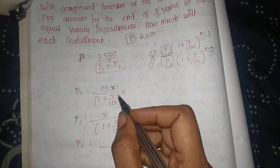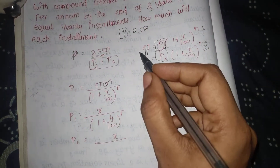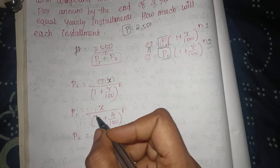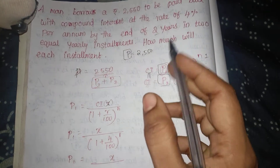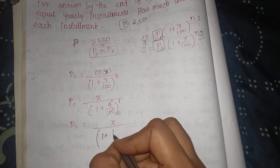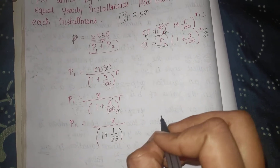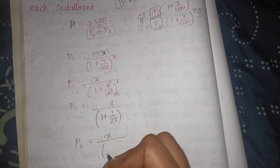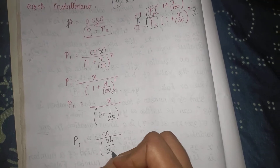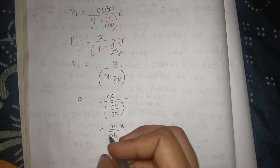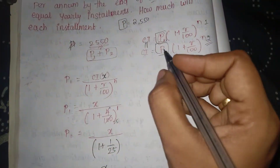Let the installment be x. Then P1 = x divided by (1 + r/100)^1. With r = 4%, that is x divided by (1 + 4/100) = x divided by (26/25), which gives P1 = 25x/26.